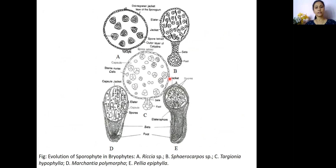This diagram shows a comparative account of the sporophytes found in many bryophytic plants. Figure A represents Riccia, B for Sphaerocarpos, C represents Targionia, then Marchantia, and this is Palia. This figure clearly shows that the most simplest form of capsule is found in Riccia, which has all fertile tissues enclosed within a single sterile jacket layer compared to the other four genera.